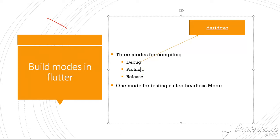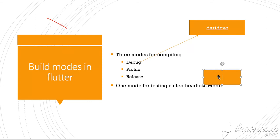Some service extensions are enabled in profile mode. The dart-to-js compiler is used for compilation in profile mode, and that same dart-to-js compiler is also used for release mode.